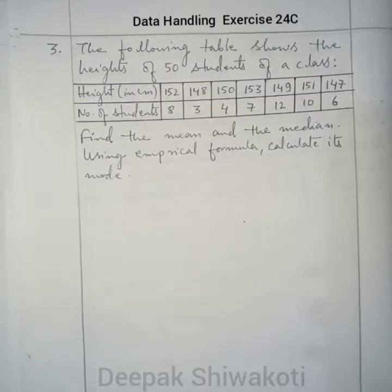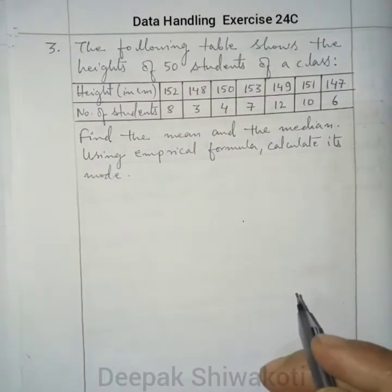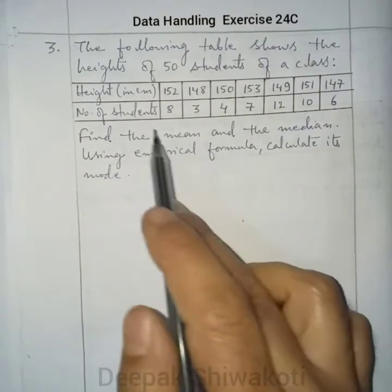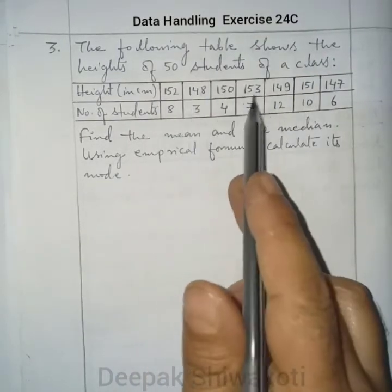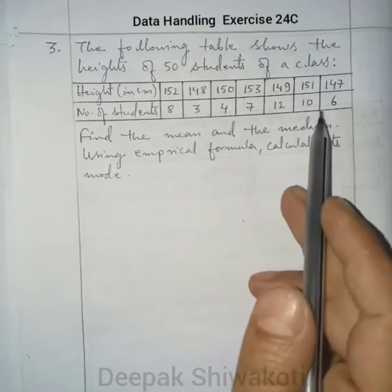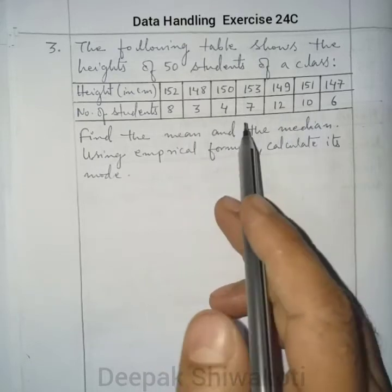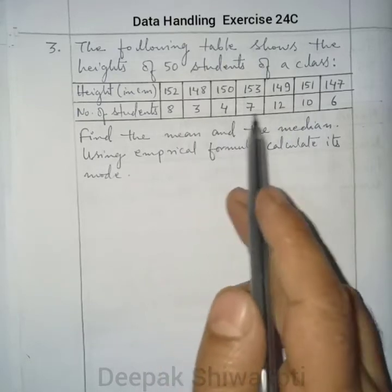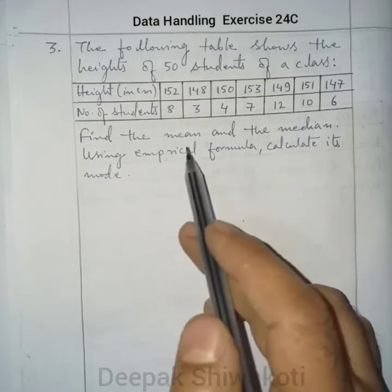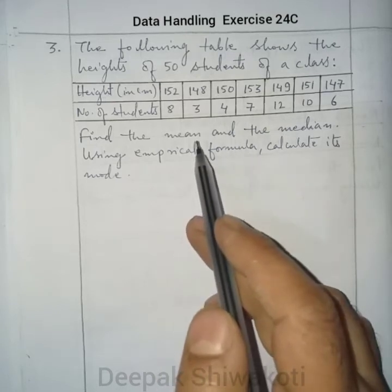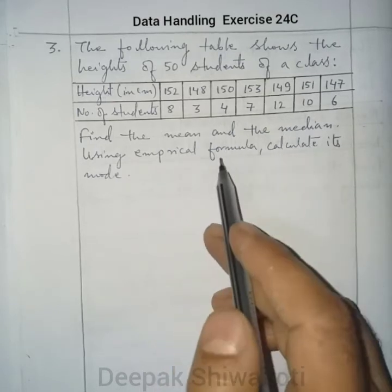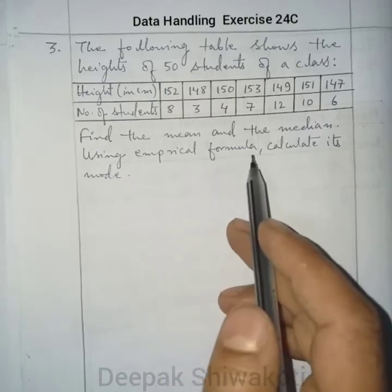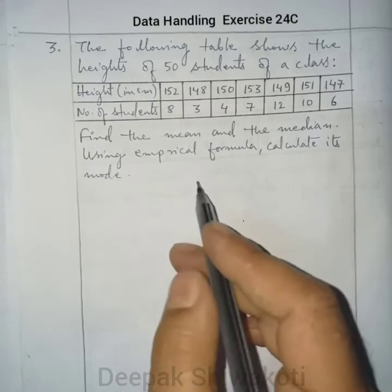Question number 3: The following table shows the heights of 50 students. We have a frequency distribution and we need to find the mean and median. Using the empirical formula, we also have to find the mode.